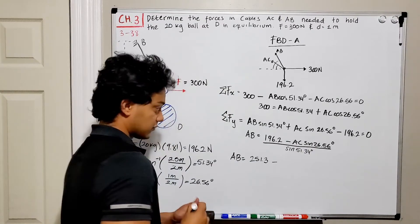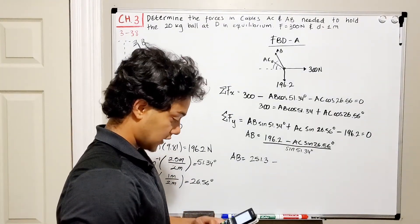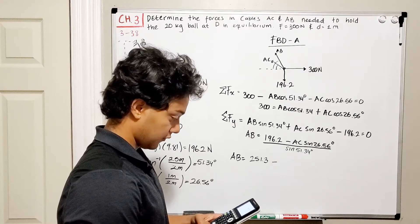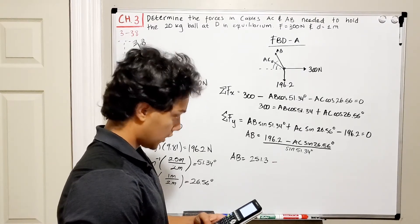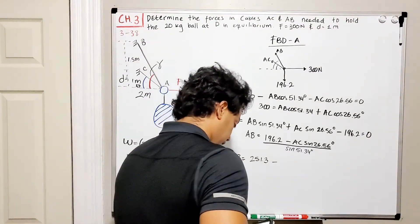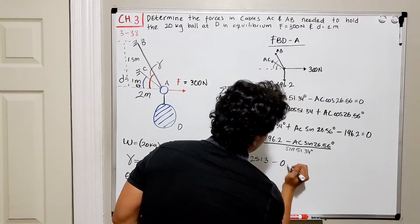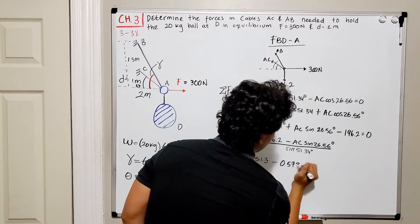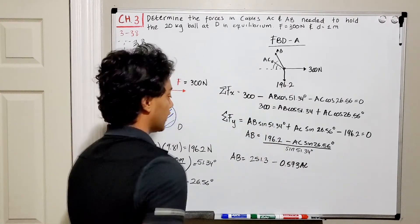sine of 26.56 divided by the sine of 51.34. And we get that this is equal to 0.573. So we got 0.573 being multiplied by AC. So this is what AB is equal to.